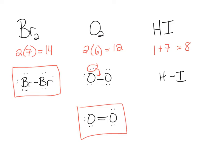For HI, we've used two electrons for the single bond, so six remain. I don't put lone pairs on hydrogen since it can only have two electrons. Instead, I put three lone pairs around the iodine. The hydrogen has its single bond, the iodine has a single bond and three lone pairs making eight electrons, and the overall structure has eight electrons. That is the Lewis structure for HI.